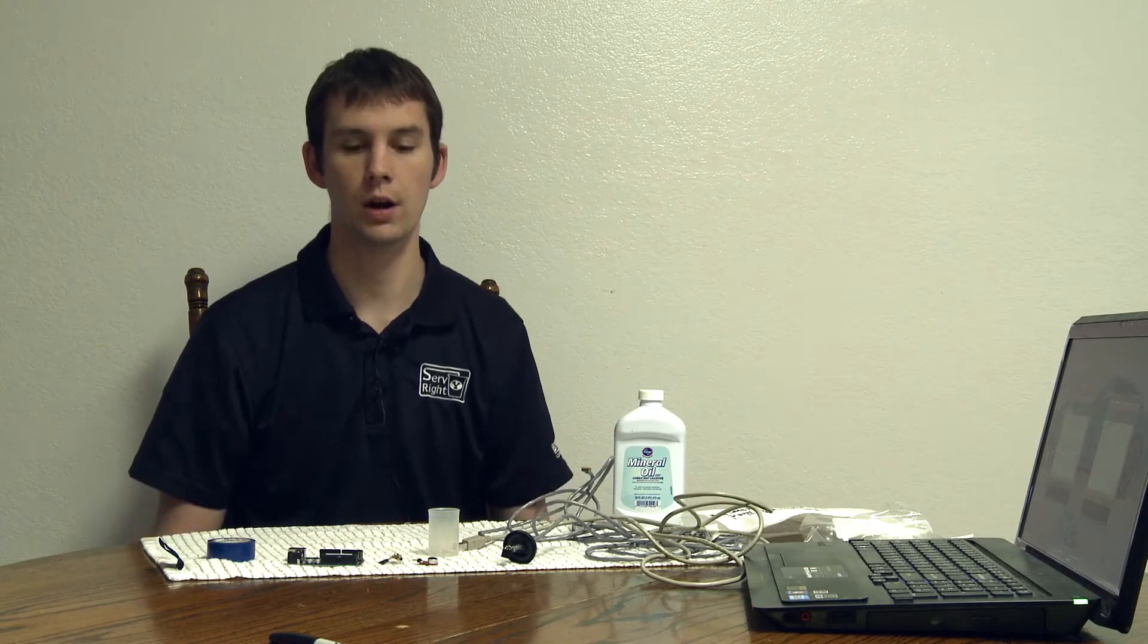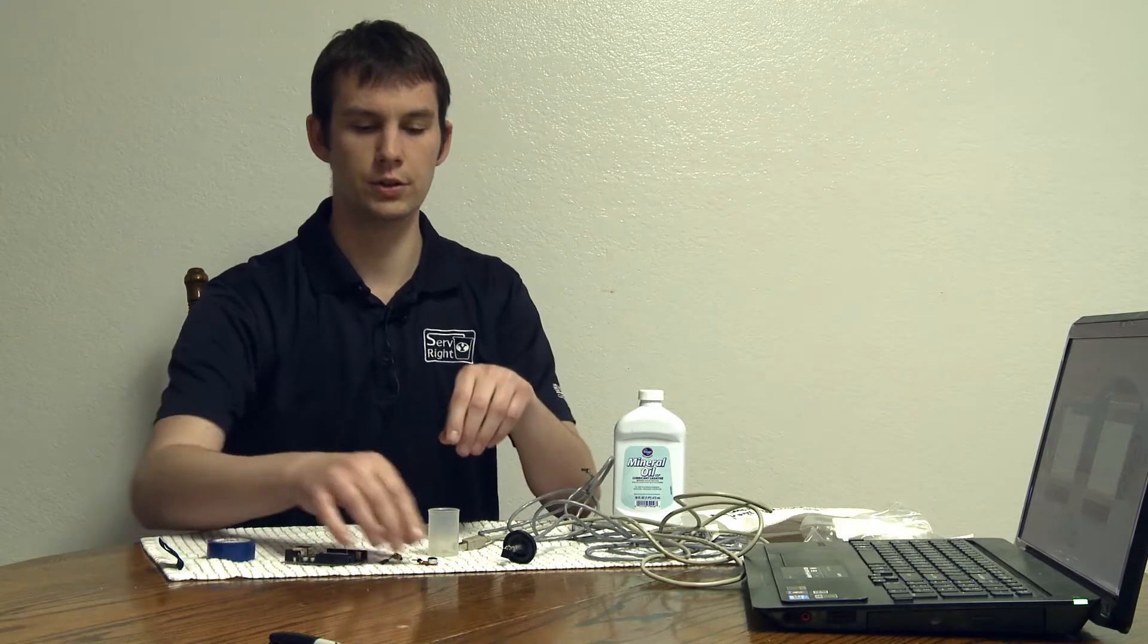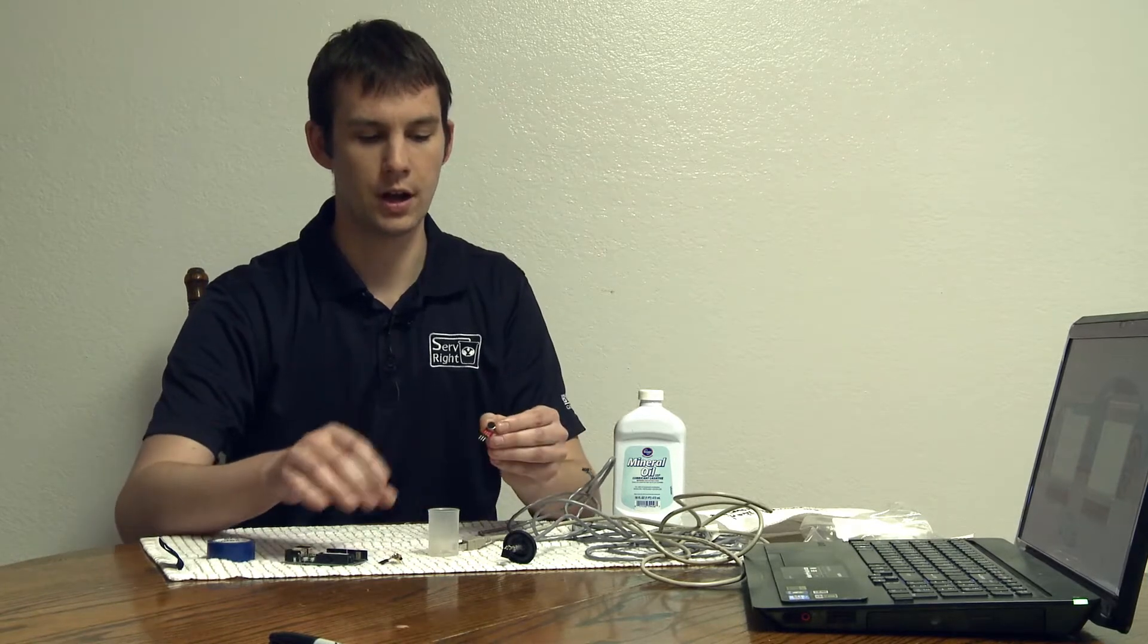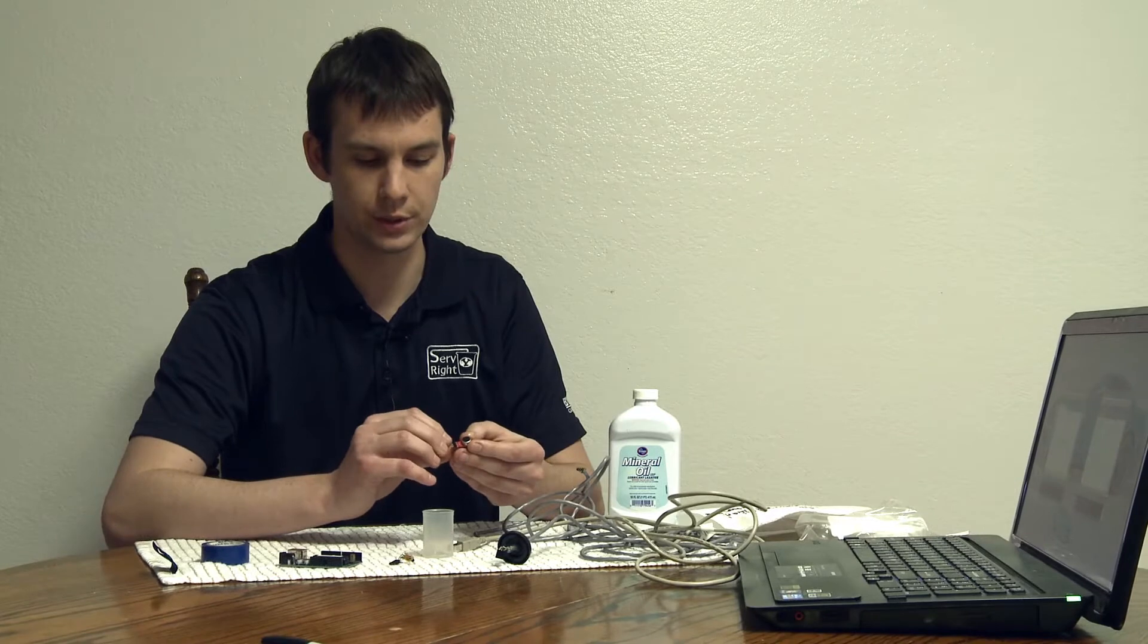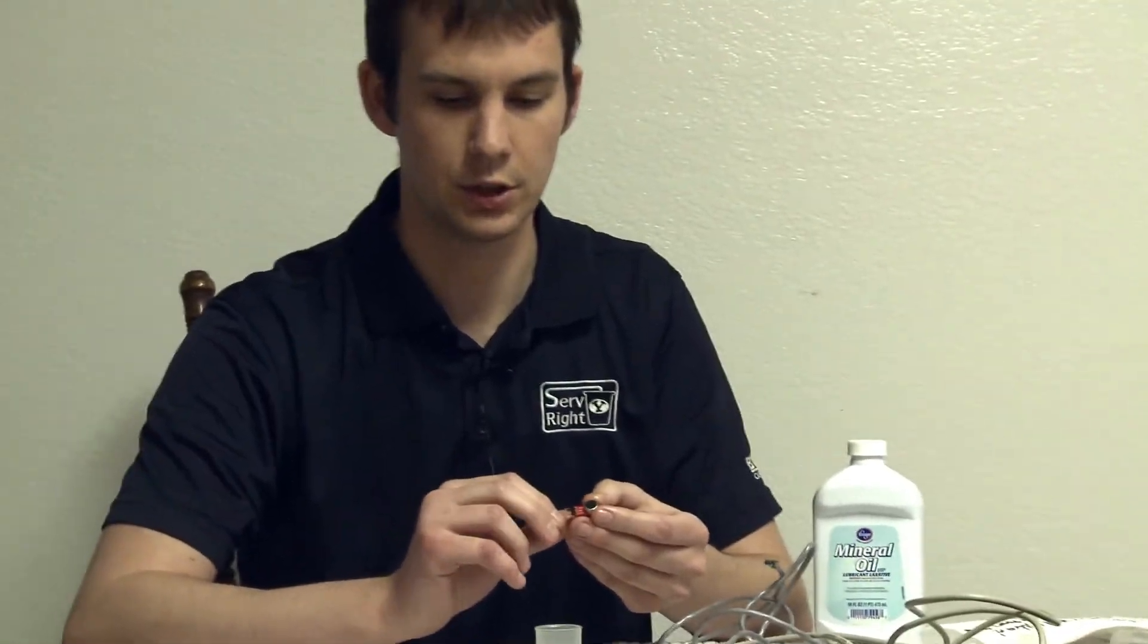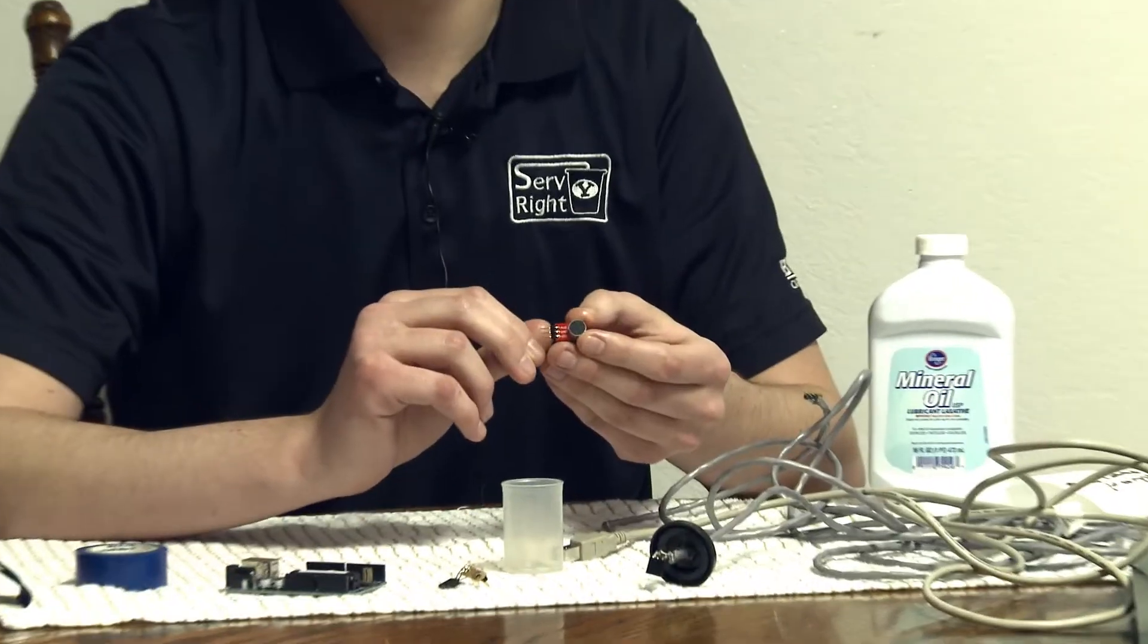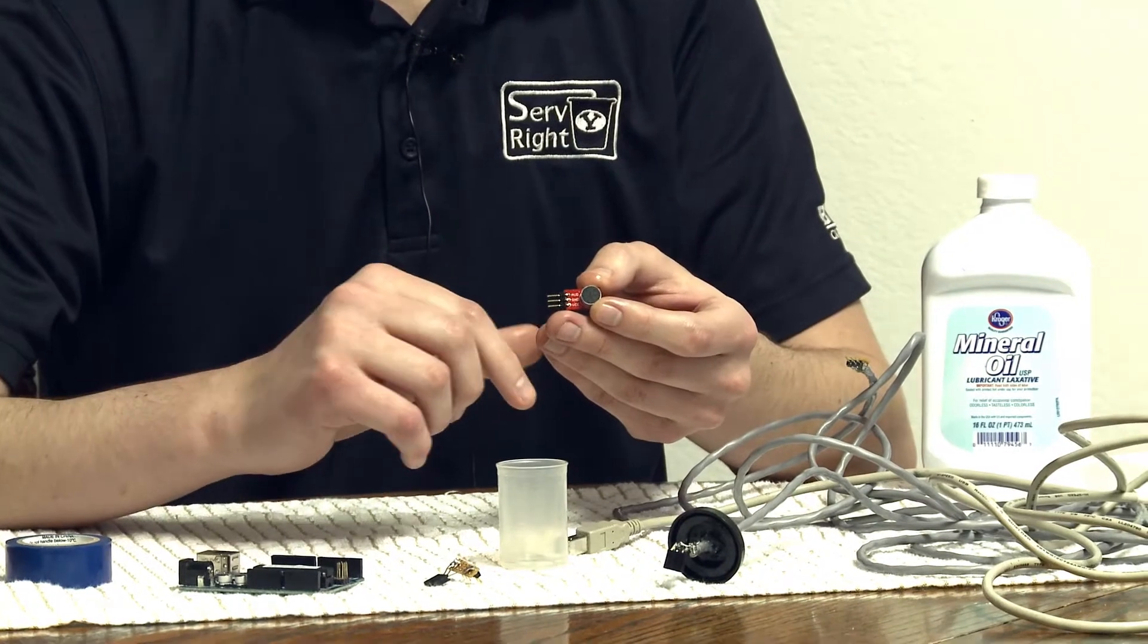We're going to talk about how to solder this thing. First, you'll want to solder your microphone. You'll notice there are three ports: audio, ground, and VCC. Make sure those correspond to those going into the Arduino.